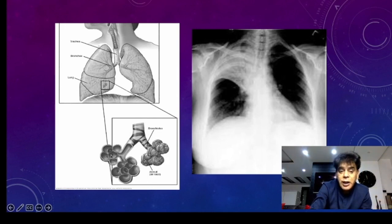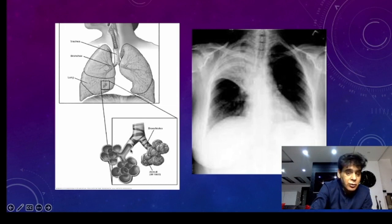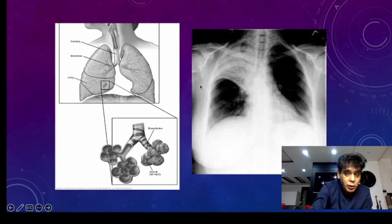What happens in the collapse of the lung? The alveoli become airless — they don't have air inside, they collapse — and that produces a bright patch. What is the difference between consolidation and collapse? In collapse, there is an obstruction, either within the airway leading to alveolar collapse, or extrinsic compression like pleural effusion. These alveoli collapse and appear bright because they don't have air inside.